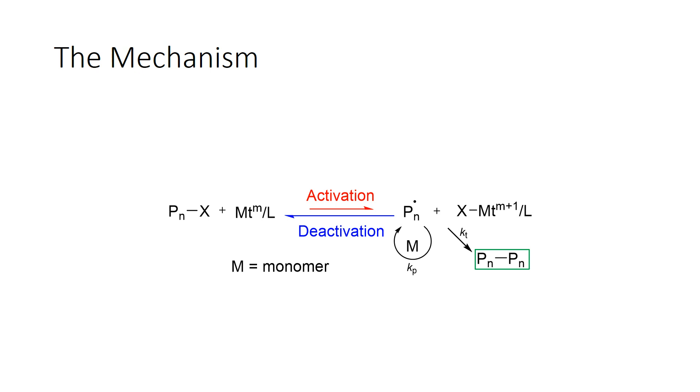But this is in general ATRP. So what you have to do is you have a dormant species that is activated by a metal catalyst forming the propagating radical that can react with monomer. And then we have a deactivation by this copper two species over here to the right which deactivate and reforms the dormant species. And there's this equilibrium between the activation and the deactivation that ensures we have a controlled radical polymerization and not just a free radical polymerization.